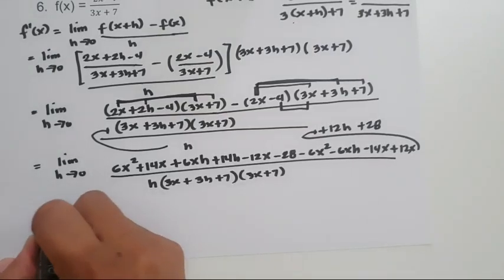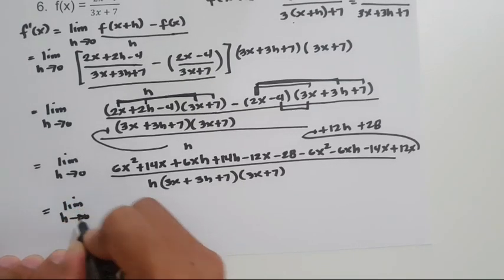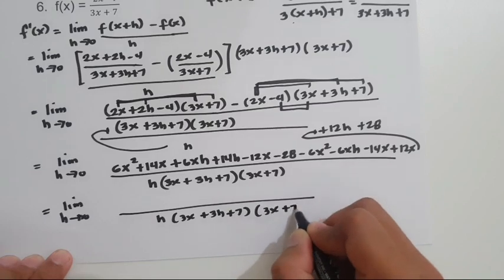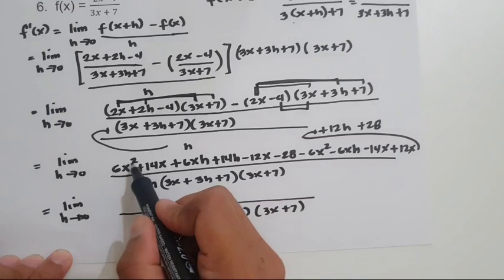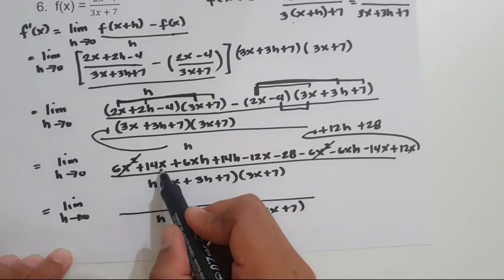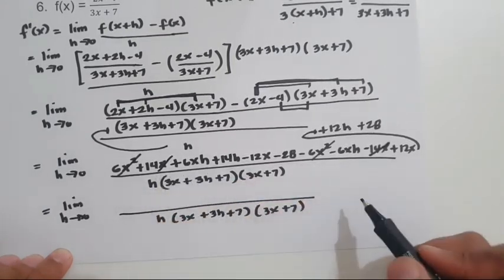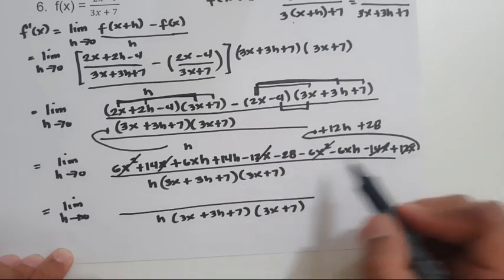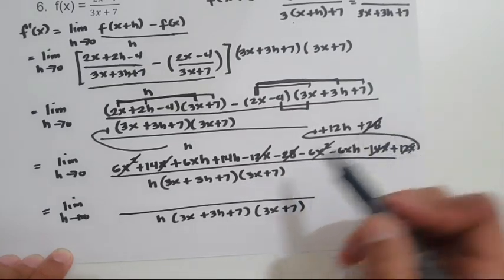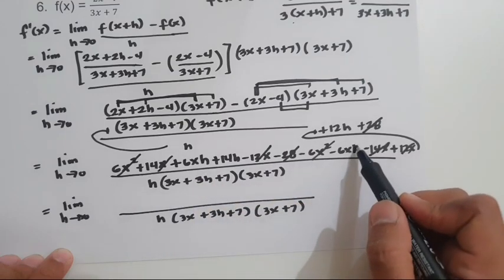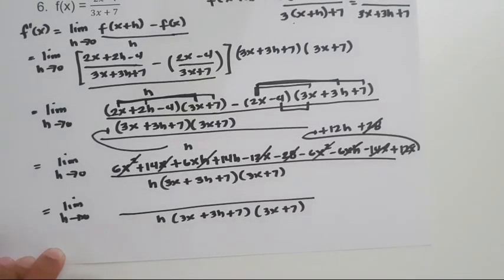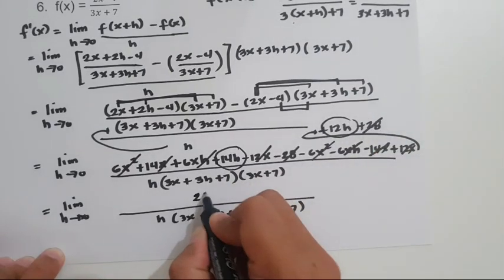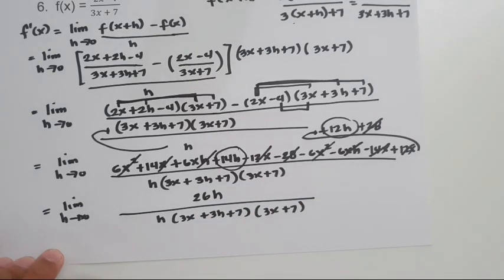Now we simplify the numerator. 6x squared minus 6x squared cancels to 0. 14x minus 14x cancels to 0. Negative 12x plus 12x cancels to 0. Negative 28 plus 28 cancels to 0. 6xh minus 6xh cancels to 0. What remains is 14h plus 12h, which is 26h. We can cancel h with the h in the denominator.